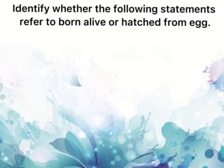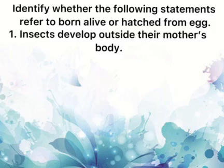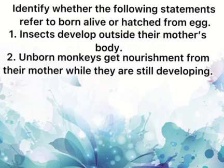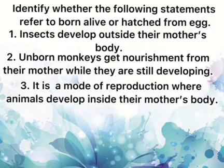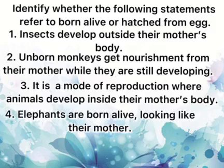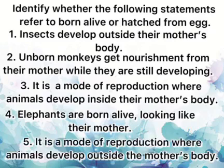Identify whether the following statements refer to born alive or hatched from egg. 1. Insects develop outside their mother's body. 2. Unborn monkeys get nourishment from their mother while they are still developing. 3. It is a mode of reproduction where animals develop inside their mother's body. 4. Elephants are born alive, looking like their mother. 5. It is a mode of reproduction where animals develop outside the mother's body.